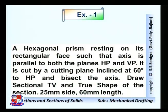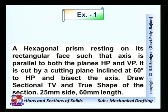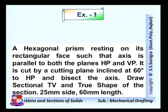The first example is based on projections of solids. A hexagonal prism is resting on its rectangular face such that the axis is parallel to both planes HP and VP. It is cut by a cutting plane inclined at 60 degrees to the horizontal plane and bisecting the axis. Draw the sectional top view and true shape of the section. Side length is 25 mm and height or length is 60 mm.